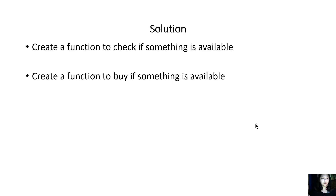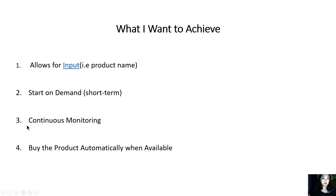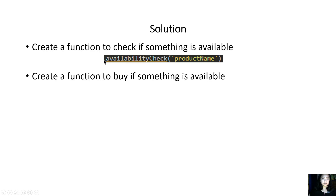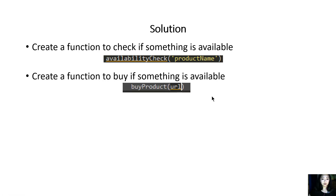We want to create two functions like we talked about. One is to monitor, one is to purchase. I'm going to create a function called 'availability_check' that takes in the product name and continues to monitor it.